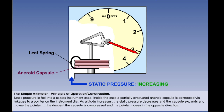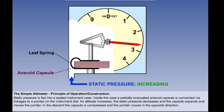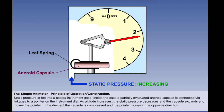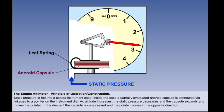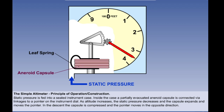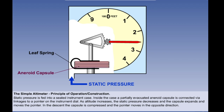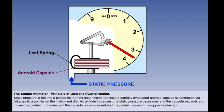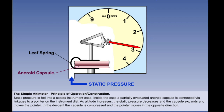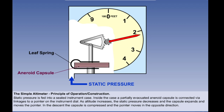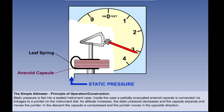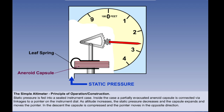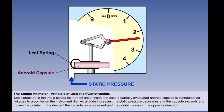The capsule expands, which causes the pointer to rotate and indicate an increase in altitude. In the descent, the capsule is compressed and the pointer moves in the opposite direction. The linkage incorporates a temperature compensating device to minimise errors caused by expansion and contraction of the linkage and changes in spring tension due to changes in the temperature of the mechanism. We can see the principle of the linkage mechanism in operation, although the actual arrangement is much more complex.